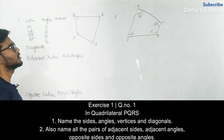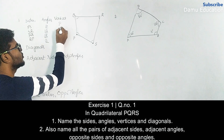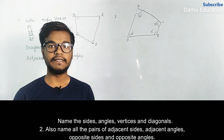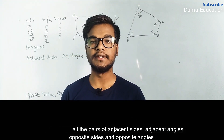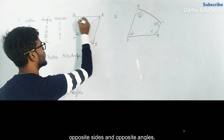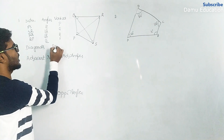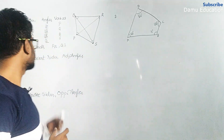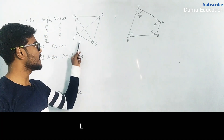The vertices are all the points where two lines join: P, Q, R, and S. Diagonals are the lines joining opposite vertices in a quadrilateral. So PR is one diagonal, joining opposite vertices, and QS is the other. Therefore the diagonals are PR and QS.